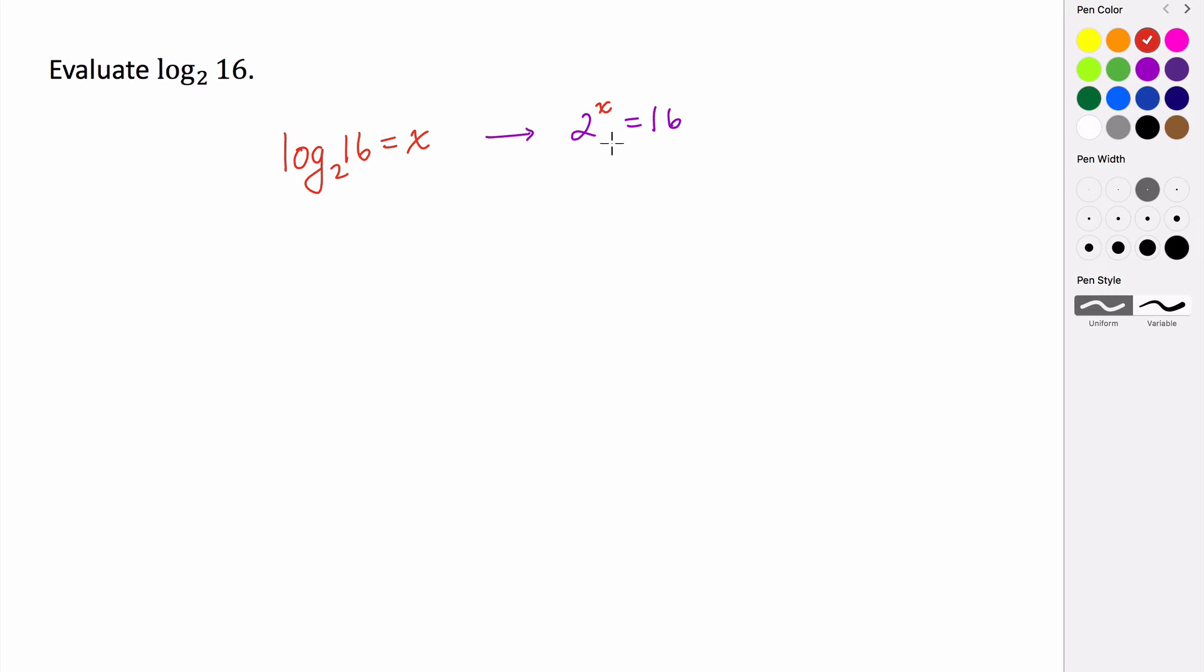To do this, we want to try and make each of these have the same base so that we can use that property that we saw in the last section. If you have two exponential expressions that are equal to each other and have the same base, then we set their exponents equal to each other. So 16 can be rewritten as 2 to the 4th power. So what that does is it gives us 2 to the x equals 2 to the 4th. And using that property, we can then say that x is equal to 4.